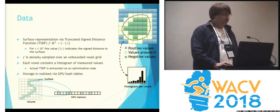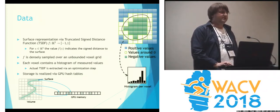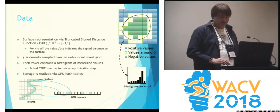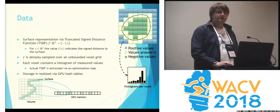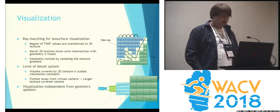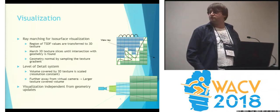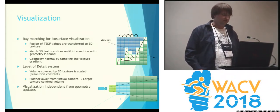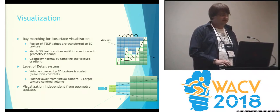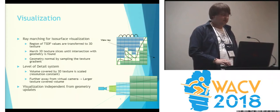We start completely on the GPU with hash tables, which reduces our memory footprint by a huge amount compared to, for example, octrees or dense storage, and we still have constant access time for reading and writing. The visualization is done with a ray-marching algorithm — essentially we display the isosurface of this function — and we also included a level-of-detail system so that we can render a huge part of the reconstructed scene in real time at interactive frame rates.